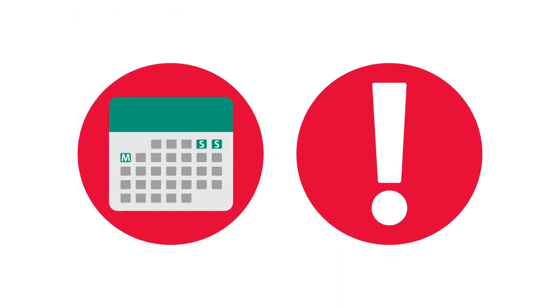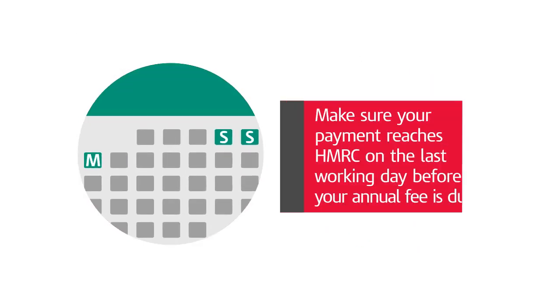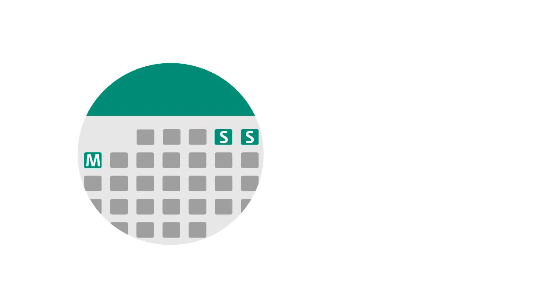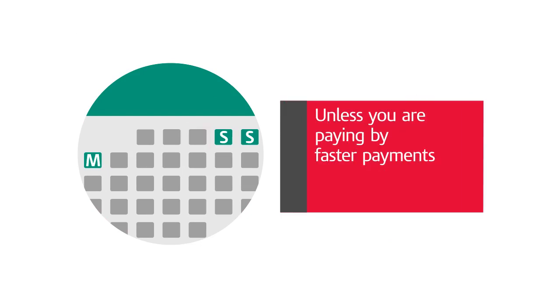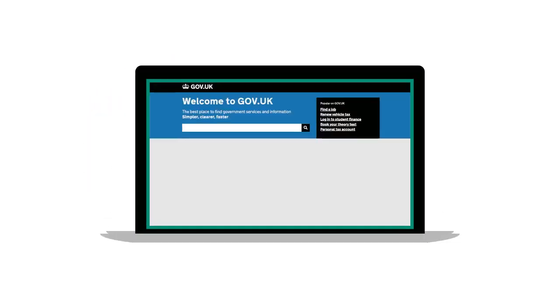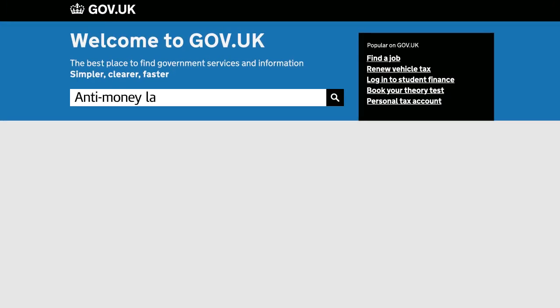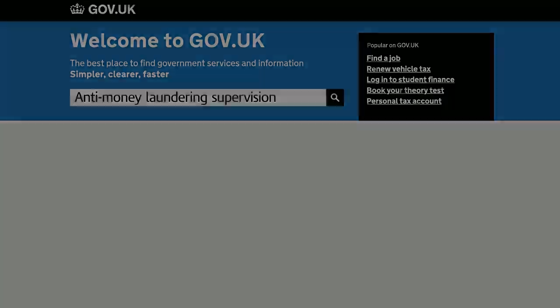If the deadline to pay your annual fee falls on a weekend or bank holiday, make sure your payment reaches HMRC on the last working day before the weekend or bank holiday, unless you're paying by faster payment. To find out more, search Anti-Money Laundering Supervision on GOV.UK.